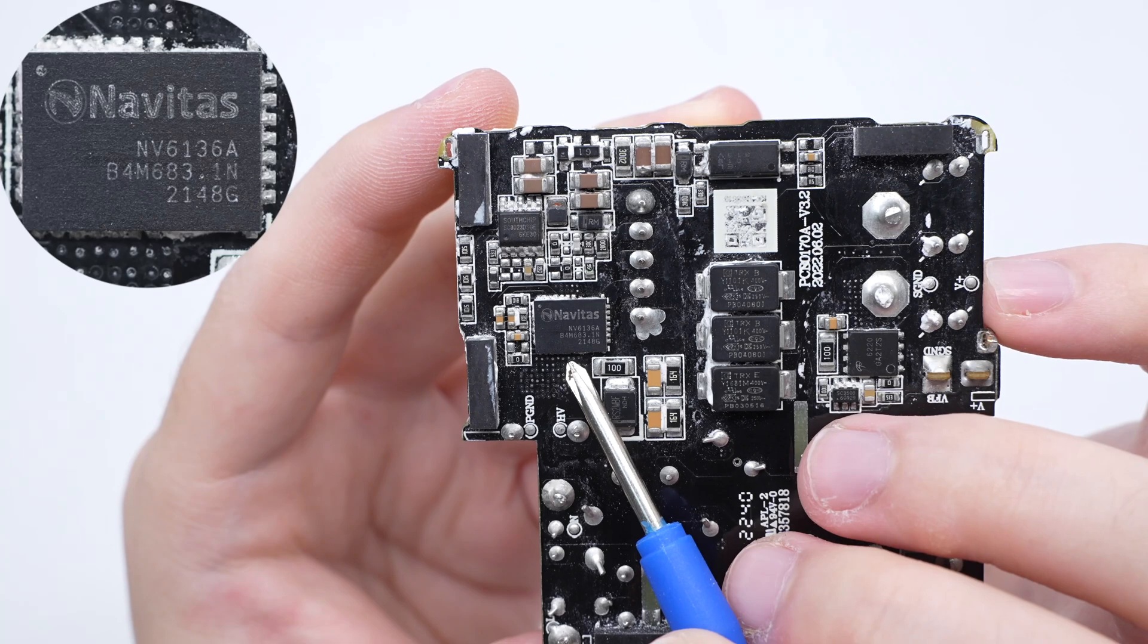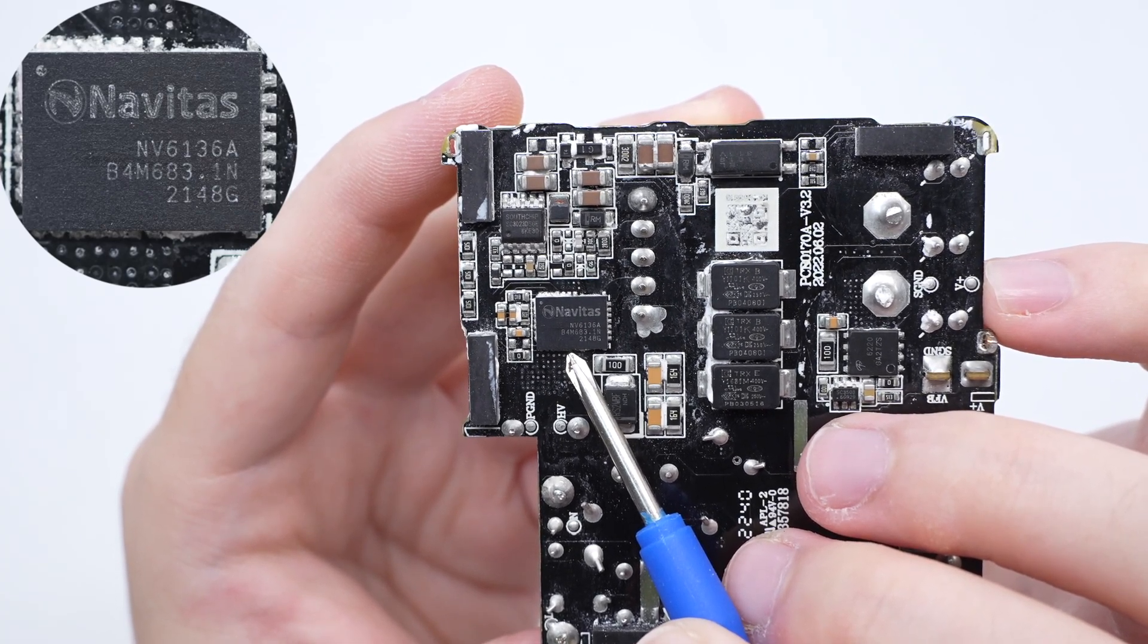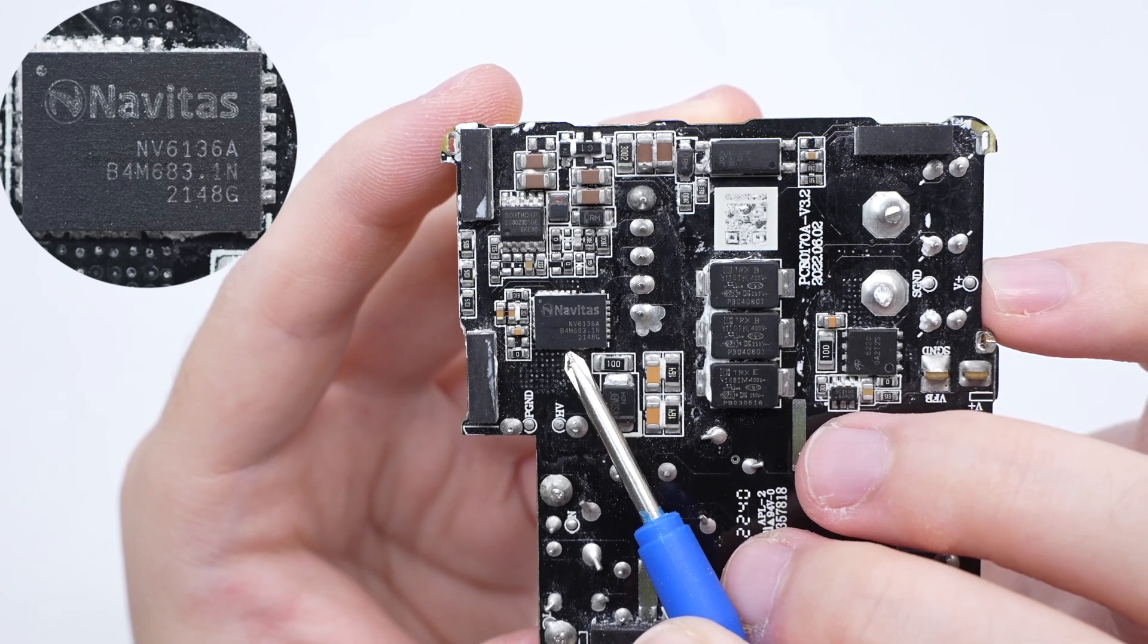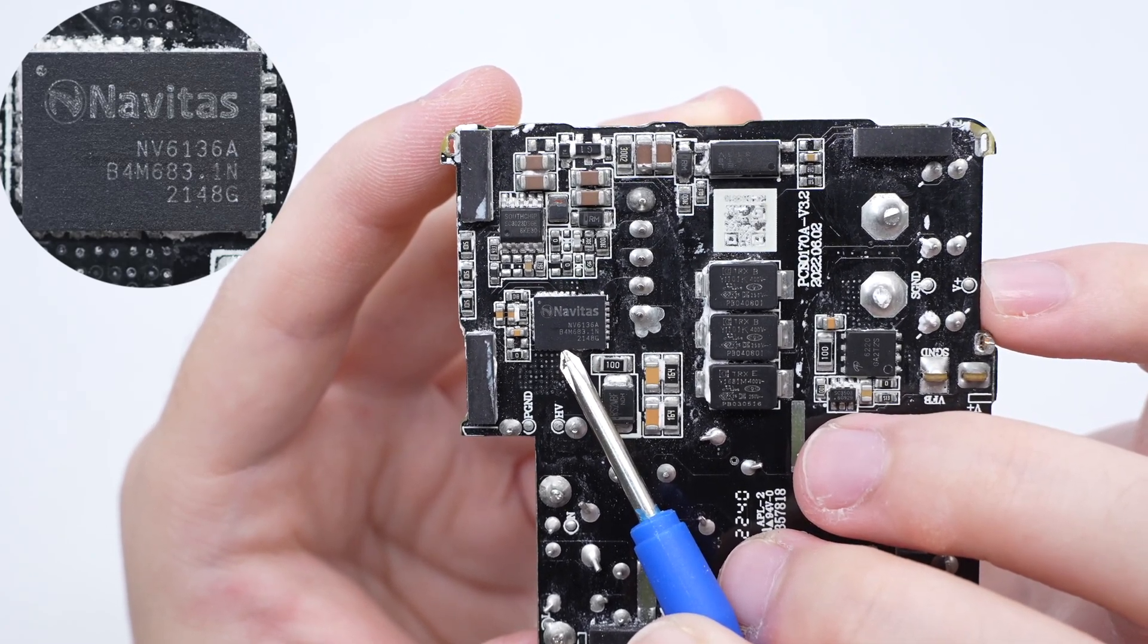The primary MOSFET is from Navitas and adopts 6x8mm QFN package. This is a highly integrated GaN power chip. 170 milliohms, 700 volts.